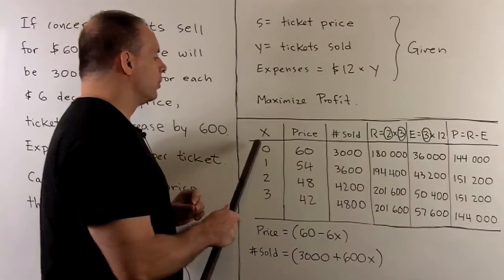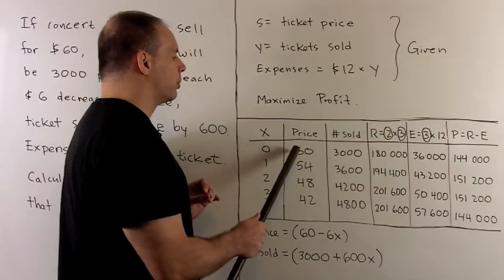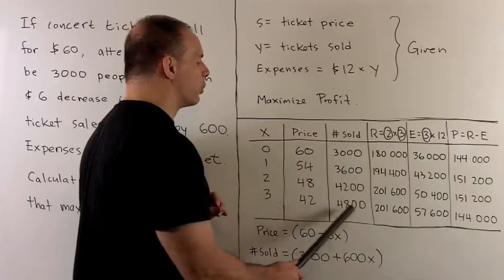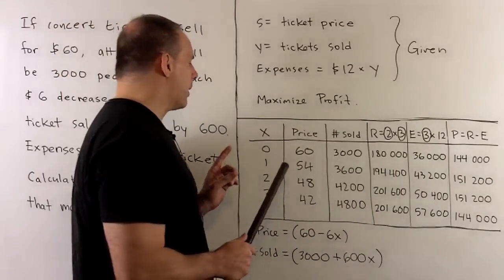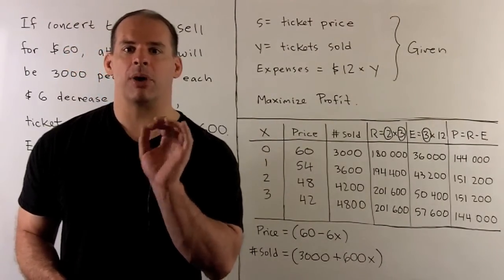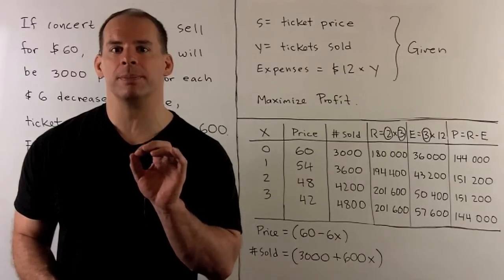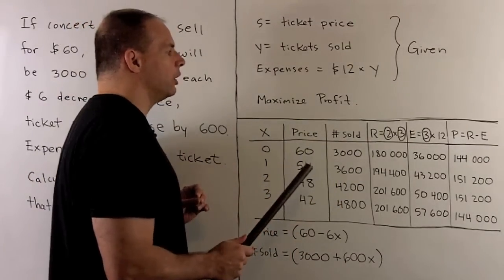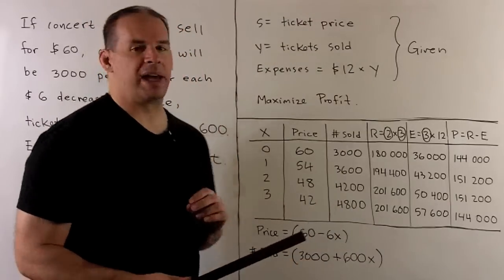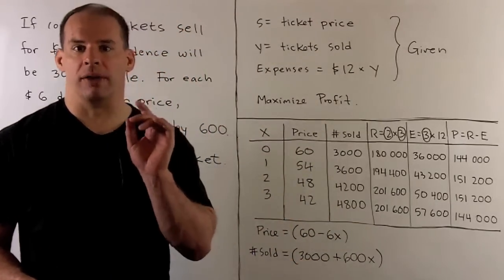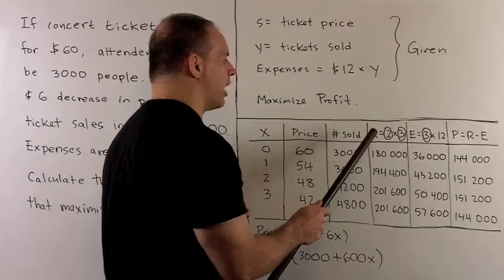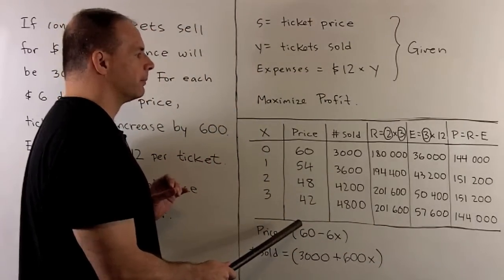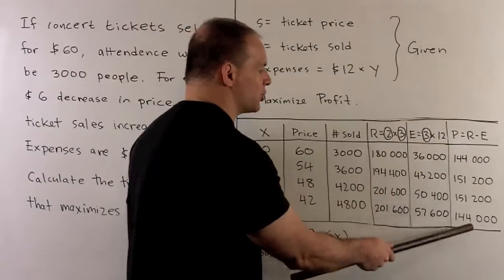Then use the increment to get the number of tickets sold. So when price is 60, we have 3,000. Then for each increment we just add 600, so 3,600, 4,200, 4,800, and so on. Now if I want to calculate profit, the formula is profit equals revenue, which is all the money we collect from ticket sales, minus the expenses. For revenue, we take our ticket price times the number of tickets sold. For expenses, we take the number of tickets sold times $12. Then for profit, we just take the difference of our columns. So here are the profits for a given set of X and ticket prices.